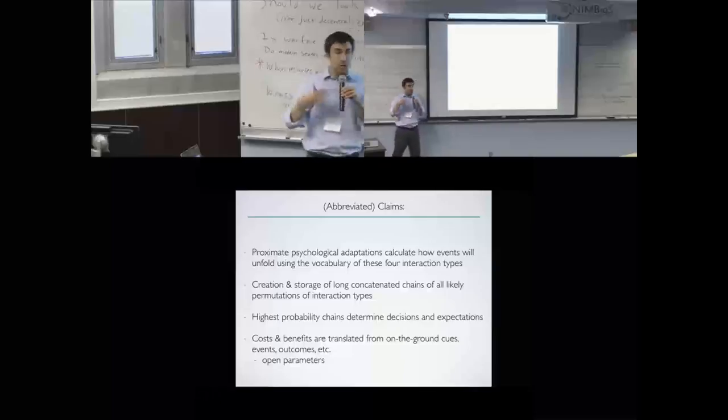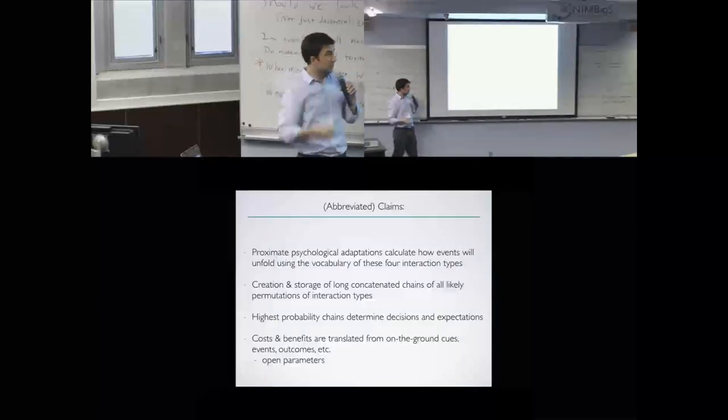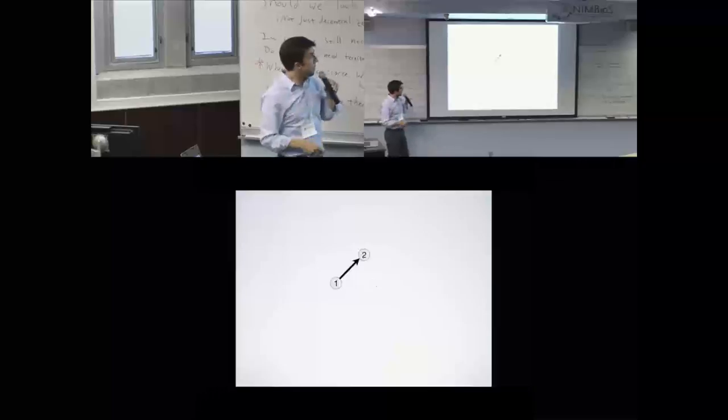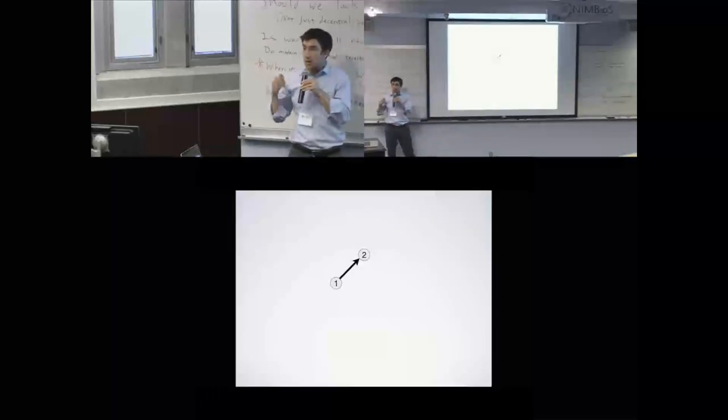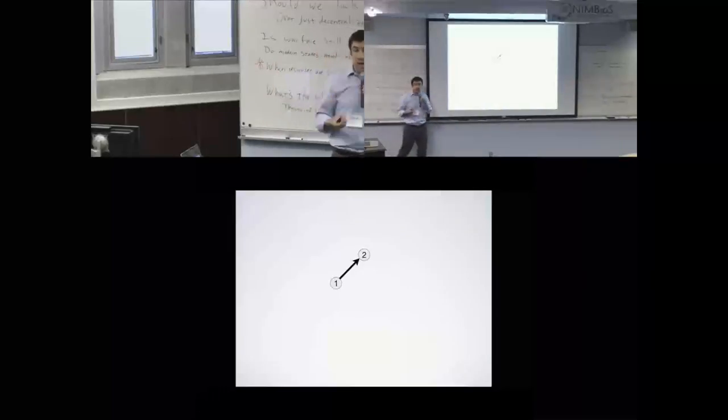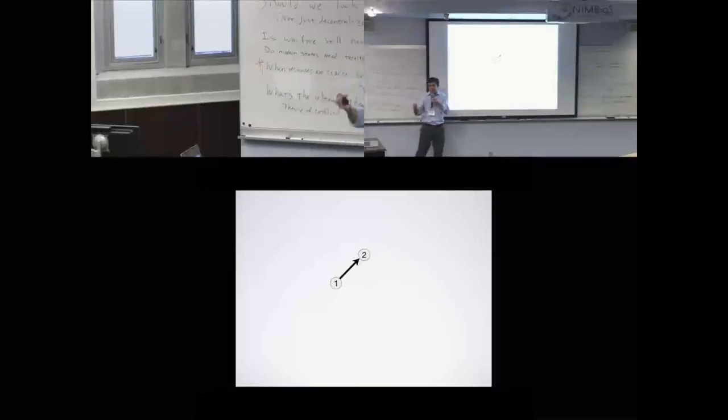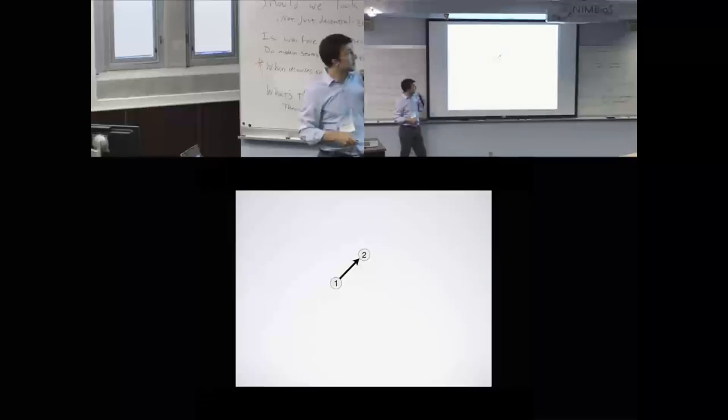Let me give you a concrete example. Let's say arrow is denoting cost imposition, so agent one is considering imposing a cost on agent two. In the dyadic context, it's just the extended phenotypic interest of agent one—the benefits to that agent's extended phenotypic interests minus the expected costs of doing this—that's going to determine whether or not you impose the cost.